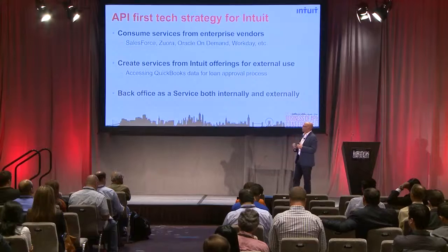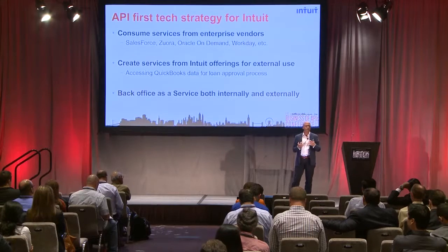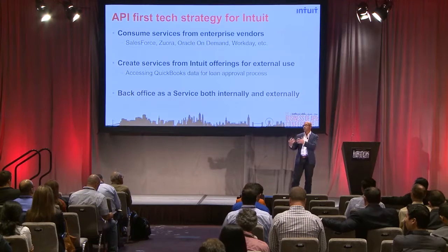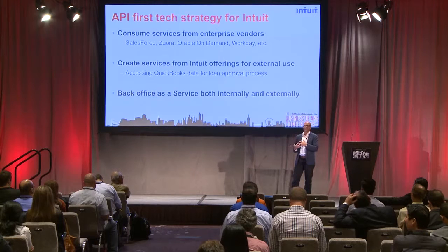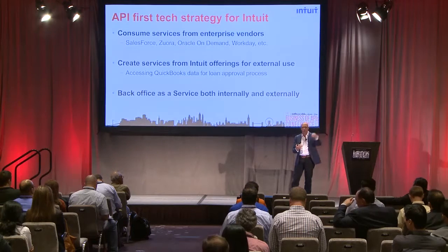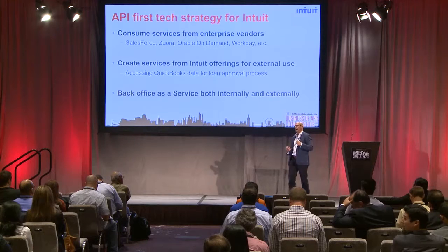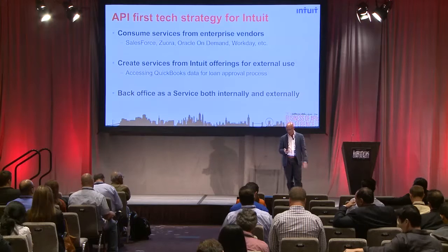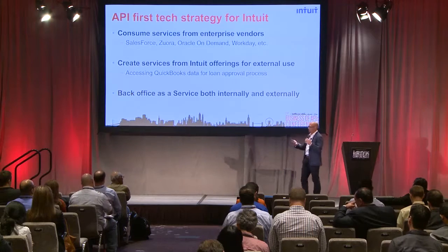We do that through exposing the QuickBooks data. Everything a lender needs to decide if a small business is worthy of a loan is in their QuickBooks file. So we expose that as APIs, allowing lenders to pull that information out with the user's permission and make decisions within days — and that's a product that's live today. The third is starting to think of our back office as a service to the company and also to our third-party developers.